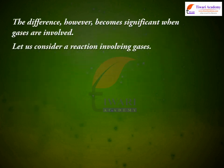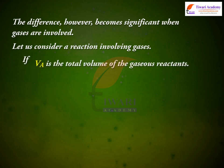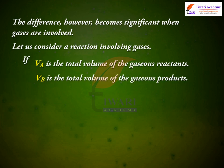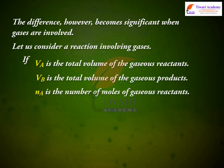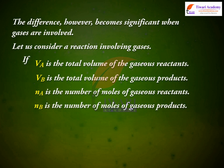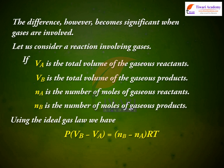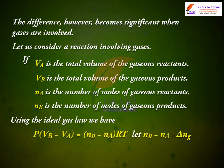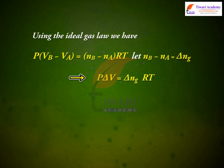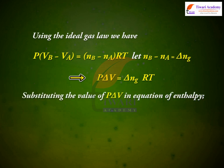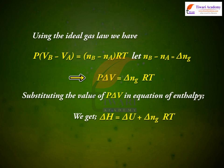The difference becomes significant when gases are involved. Let us consider a reaction involving gases. If VA is the total volume of the gaseous reactants and VB is the total volume of the gaseous products, NA is the number of moles of gaseous reactants and NB is the number of moles of gaseous products, then using the ideal gas law: P(VB − VA) = (NB − NA)RT. Let NB − NA = ΔNg. Then P·ΔV = ΔNg·RT. Substituting into the enthalpy equation: ΔH = ΔU + ΔNg·RT.